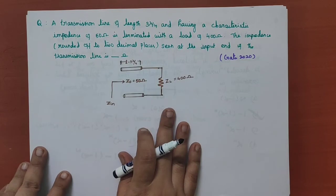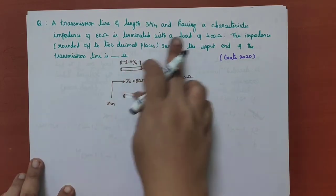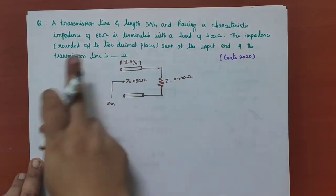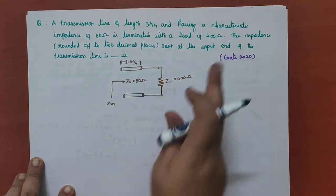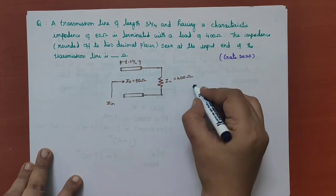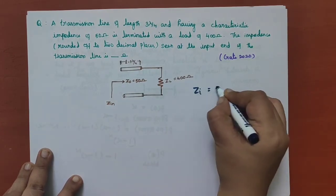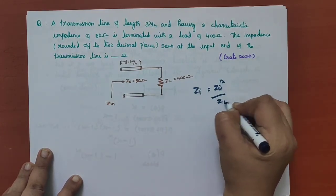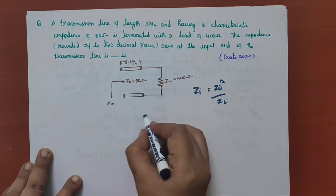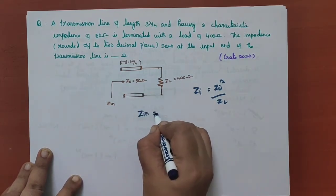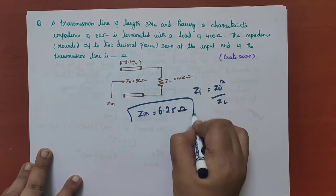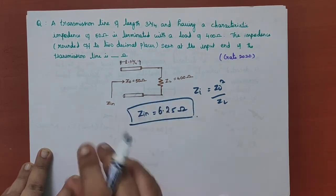The next question: a transmission line of length L having a characteristic impedance of 50 ohm is terminated with a load impedance. The impedance seen at the input end, ZI, is asked. We have the formula: ZI equal to Z-naught squared divided by ZL. Here, Z-naught is 50 ohm and ZL is 400 ohm. When you substitute these values, you get Z-in equal to 6.25 ohm.